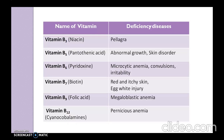Vitamin B5, known as pantothenic acid, produces deficiency diseases like abnormal growth and skin disorders. Vitamin B6, known as pyridoxine, is associated with microcytic anemia, convulsions, and irritability.